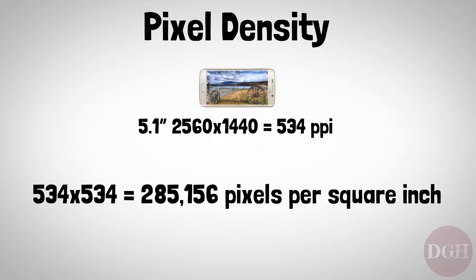That's a lot of pixels for one square inch. In fact, there comes a certain point — arguably around 300 PPI — beyond which the human eye simply can't tell the difference. Beyond that point, it may just be a waste of battery life to have such a high-resolution display on a mobile device, unless you're planning on using it as a virtual reality headset, but that's another topic.